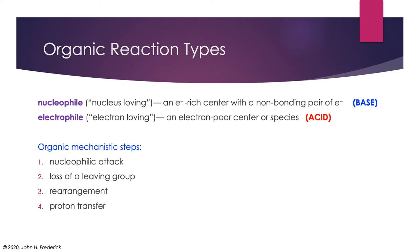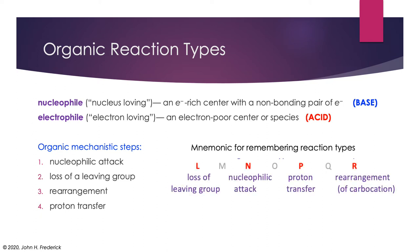Now, it's not my habit to ask you to memorize things, and I'm not going to ask you to memorize these. But if you'd like a mnemonic for remembering these reaction types, you might think of the letters from L to R, L-M-N-O-P-Q-R. Every other letter gives you a clue for one of these steps. L for loss of a leaving group, N for nucleophilic attack, P for proton transfer, and R for rearrangement. So this gives you a way to remember what these four steps are.